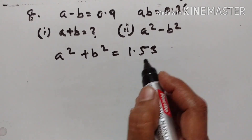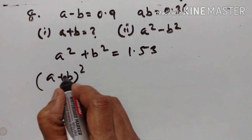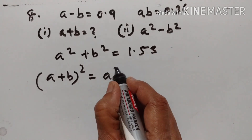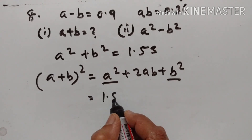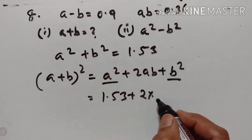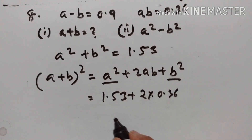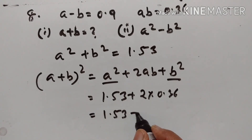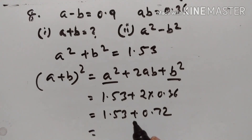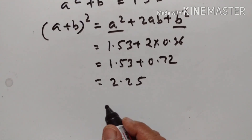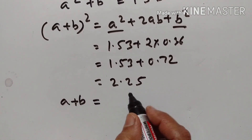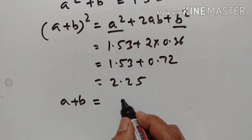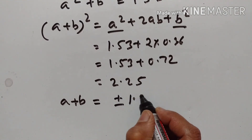A² + B² = 1.53. Now (A+B)² = A² + 2AB + B² = 1.53 + 2×0.36 = 1.53 + 0.72 = 2.25. Taking the square root on both sides, A + B = √2.25 = ±1.5.